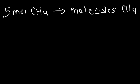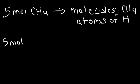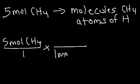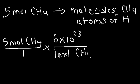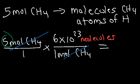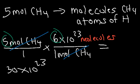Let's say we have five moles of methane (CH4). Convert it into molecules of methane. CH4 is a molecule — a particle with multiple atoms, composed of nonmetals carbon and hydrogen. So: five moles of CH4 over one, and using Avogadro's number, one mole equals 6 times 10 to the 23 molecules. The moles unit cancels. Five times 6 is 30, so we have 30 times 10 to the 23, which equals 3.0 times 10 to the 24 molecules of CH4.